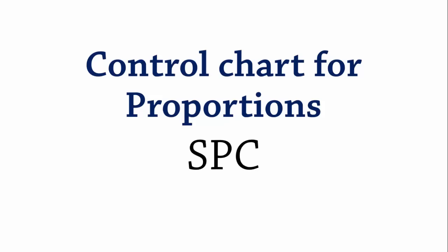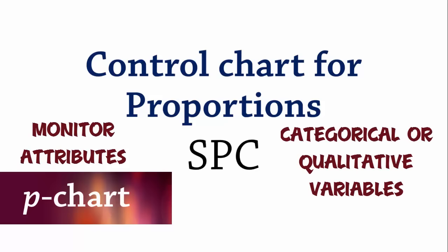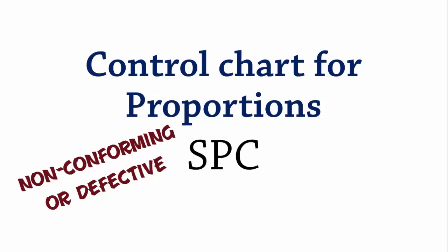The p-chart is used to monitor attributes and applies to categorical or qualitative variables. They are generally used to analyze the proportions of non-conforming or defective items in a process.